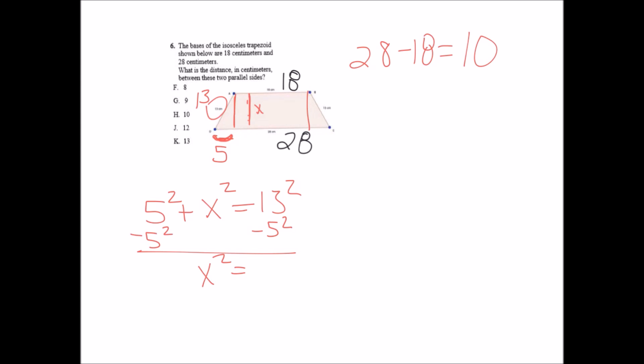So x squared equals 144, or then x equals the square root of 144, which is 12. So the measure of this side right here is 12. That side right there is 12 centimeters, and the correct answer is J.